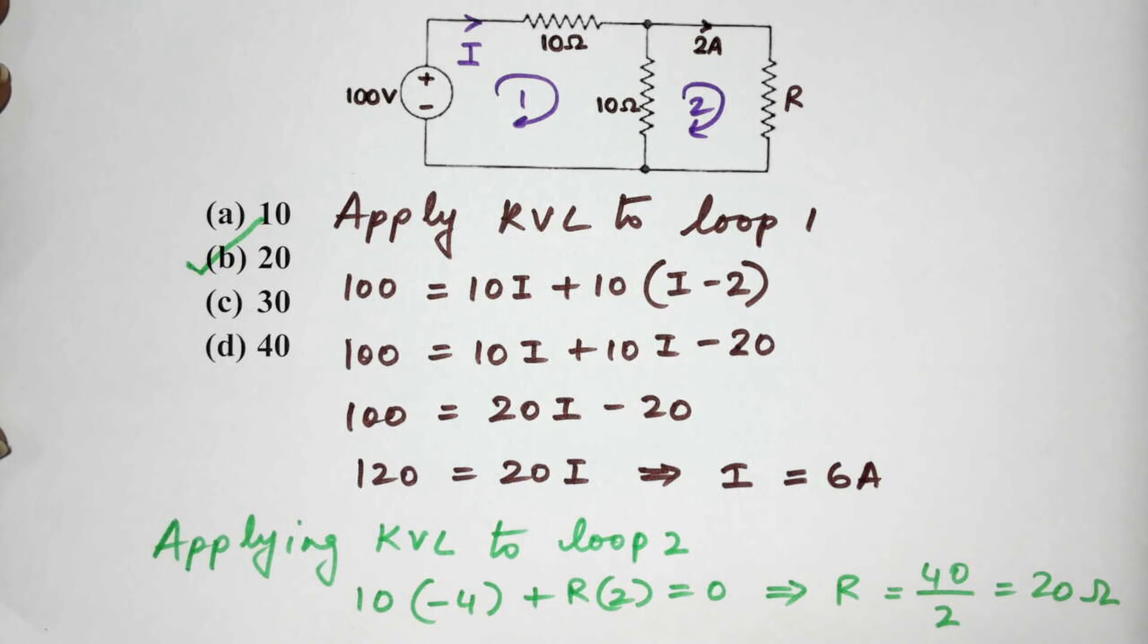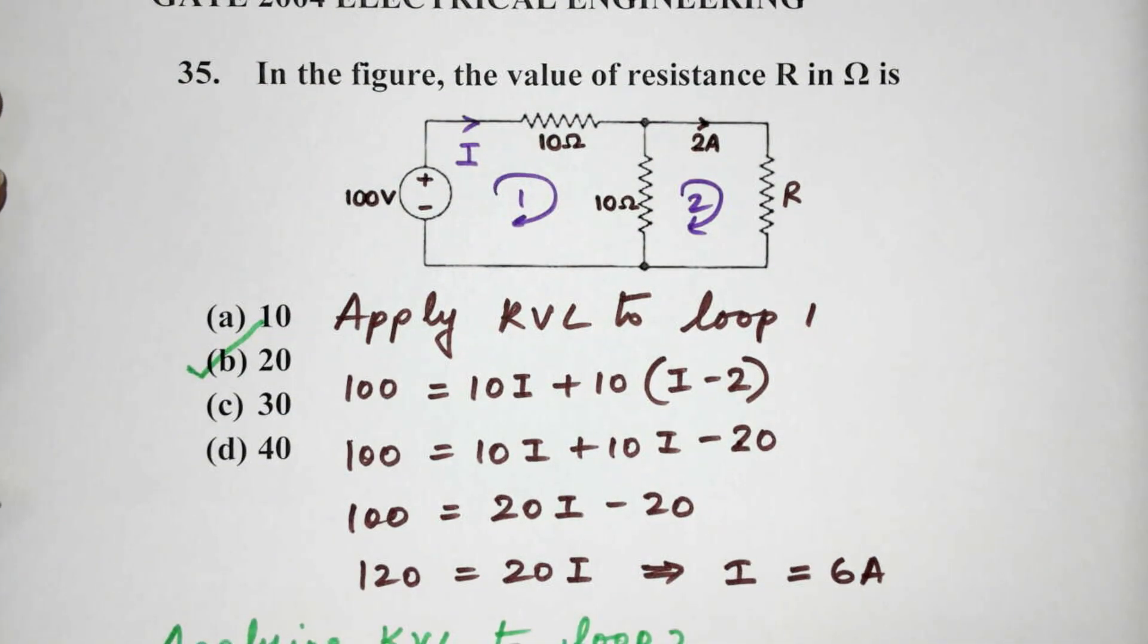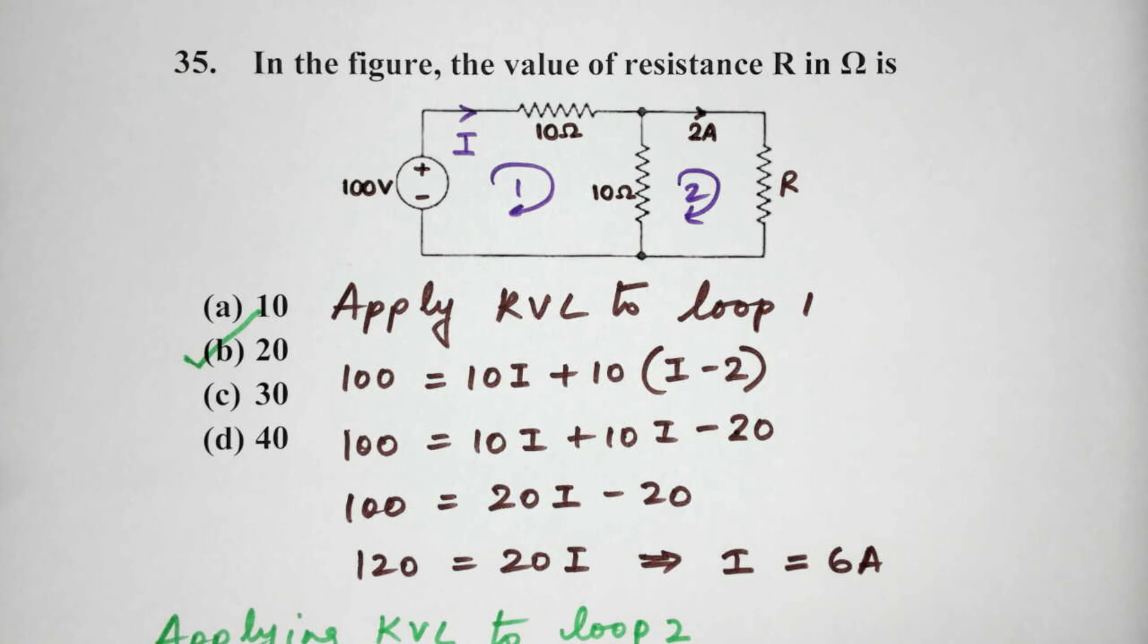So, here the value of R in this portion of the figure is 20 ohms.